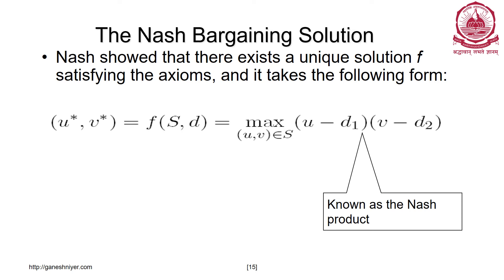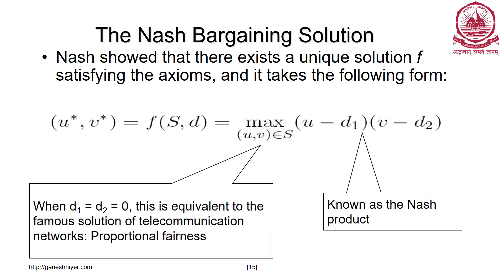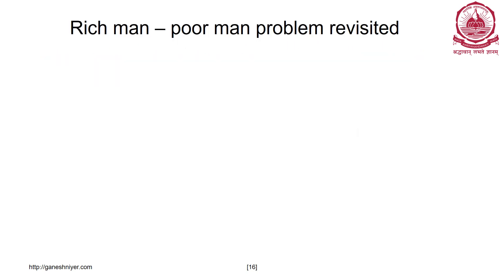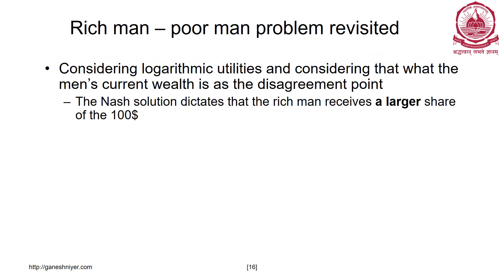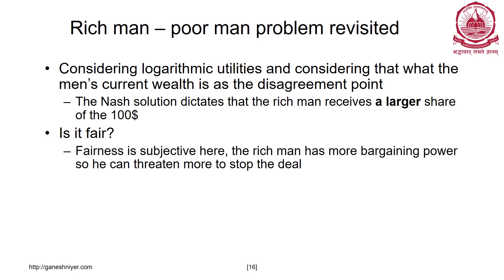When D1 = D2 = 0, this is equivalent to the famous solution of proportional fairness, especially in the context of telecommunication networks. Considering logarithmic utilities and each man's wealth, the Nash solution dictates that the rich man receives a larger share. Is that fair? Fairness is subjective here — maybe for a poor man, one meal is something he is going to value like anything.